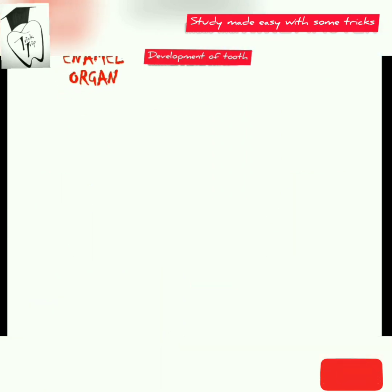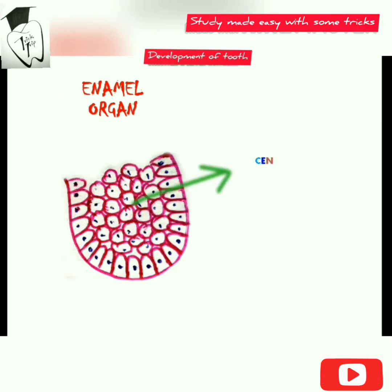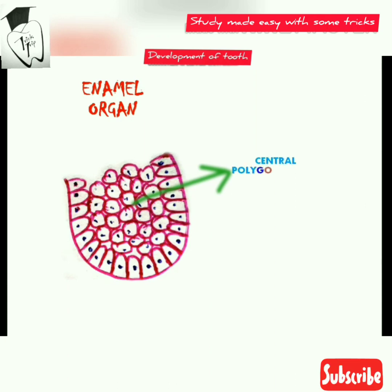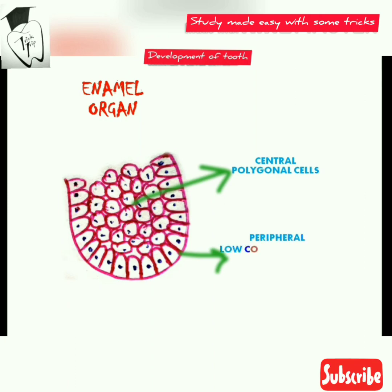Let's take a closer look at the enamel organ — what are the cells and how are they arranged. There are polygonal cells in the center and low columnar cells in the periphery.